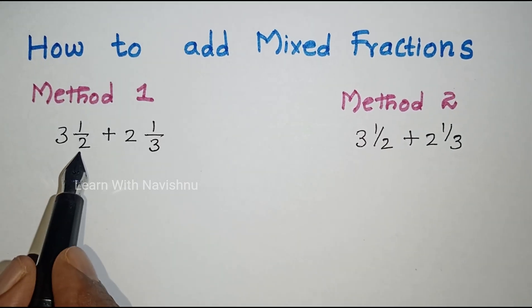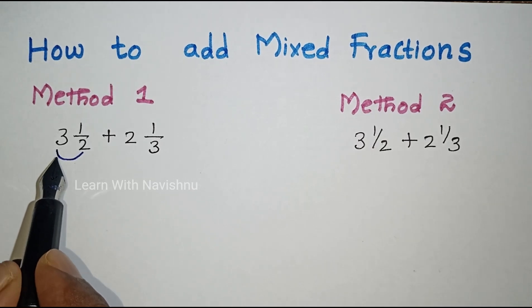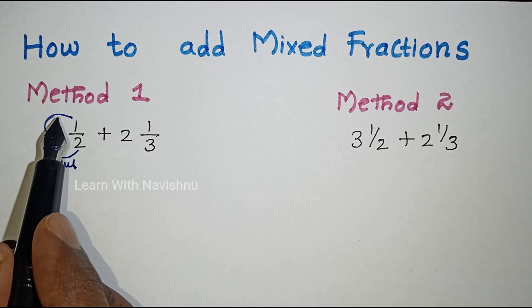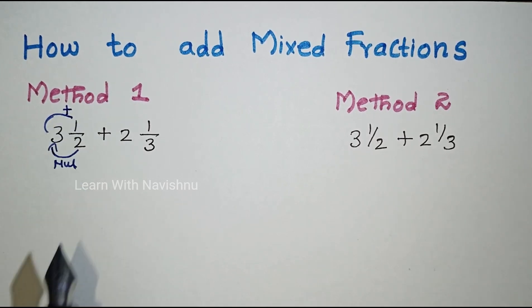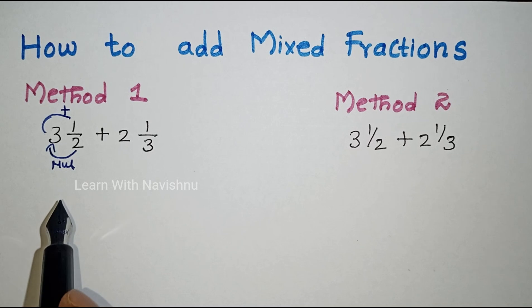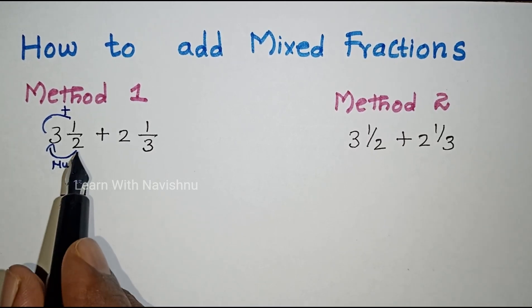Mixed fractions are converted to improper fractions. Multiply the base and whole number, then add the answer to the numerator. For the first fraction, we need the numerator: 3 times 2 is 6, 6 plus 1 is 7, divided by the denominator 2.